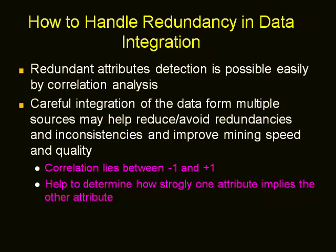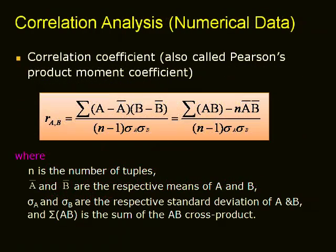How do we determine correlation coefficients? The correlation coefficient always lies between minus 1 and plus 1. For numerical attributes, using correlation analysis between two attributes, we can determine how strongly one attribute implies the other on the given data. The correlation coefficient is also termed as Pearson's product moment coefficient. It is denoted by R. Here A and B are the attributes, N is the number of tuples, A-bar and B-bar are the means of A and B, sigma A and sigma B are standard deviations of A and B, and sigma AB is the sum of the cross product of A and B.